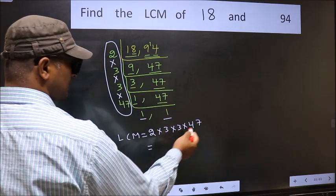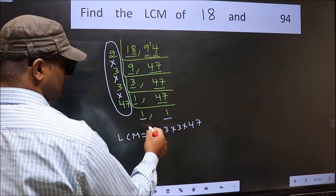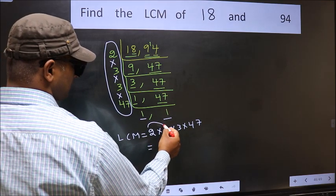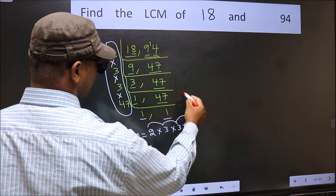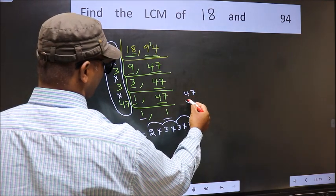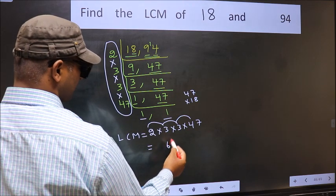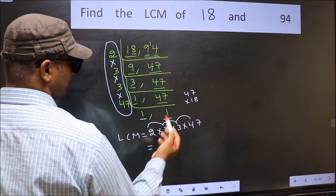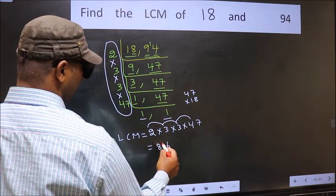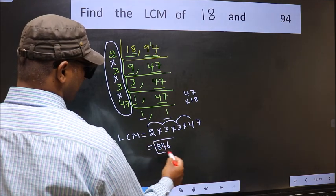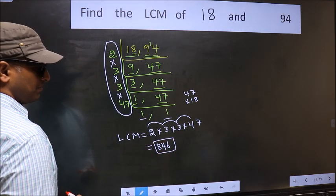So let us multiply these numbers. 2 into 3, 6, into 3, 18, into 47. 18 into 7, 126, 6, 12, 18 fours, 72, plus 12, 84. So 846 is our LCM. This is our LCM.